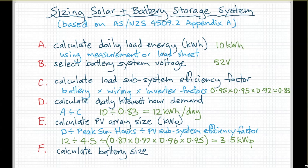Once we apply the PV subsystem efficiency factors — thermal losses, wiring losses, conversion losses of the charge controller or inverter, and AC output losses — and divide through, we find that for 10 kWh/day load energy at 4.5 PSH, we need 3.5 kWp (kilowatts peak, nameplate rating) of solar panels to achieve replacement of that energy and recharging of the batteries.